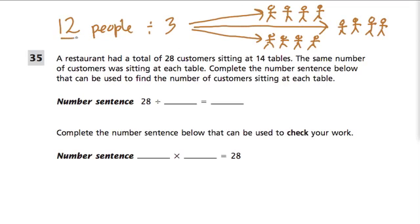Except instead of 12 people, there are 28 customers or people. And then instead of just saying groups, there are tables, and those tables are the groups. And they say it here, the same number of customers were sitting at each table.